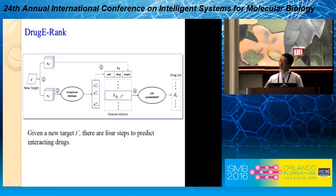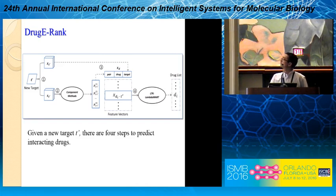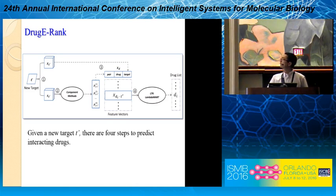Here I present our method. Here is an example using the new target scenario. The method is roughly divided into four steps. In the first step, we try to represent the target and drug as features. We also get the similarity between the new target and existing targets. We use component methods — similarity-based methods — and get prediction scores from these component methods. Then we use all three sets of features and apply the learning-to-rank method to make predictions.